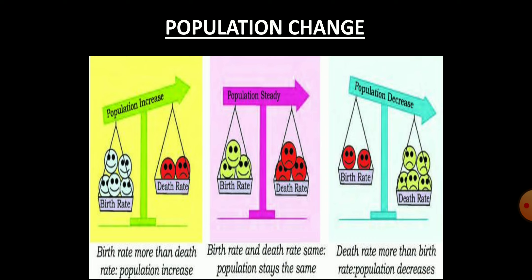Here are three images — one in yellow, one in pink, and one in light blue — that show population change due to the difference between birth rate and death rate. The first image shows that when birth rate is more than death rate, it results in population increase. The second depicts that if birth rate and death rate are equal, population remains steady. And from the third image, when birth rate is less than death rate, the population decreases.